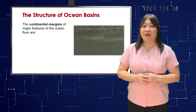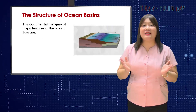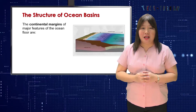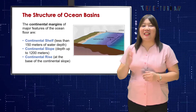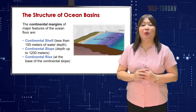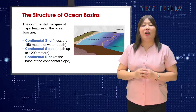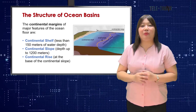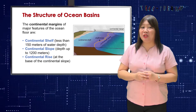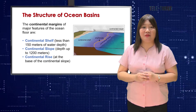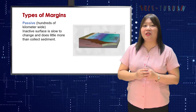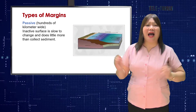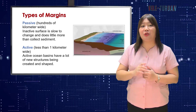The structure of ocean basins involves measuring the size and shape of the Earth's ocean basins. The continental margins are major features of the ocean floor: the continental shelf with less than 150 meters of water depth, the continental slope or steep ramp to a depth up to 1,200 meters, and the continental rise found at the base of the continental slope. These types of margins may be passive, whose shelf is hundreds of kilometers wide, or active, whose shelf may be less than 1 kilometer wide.